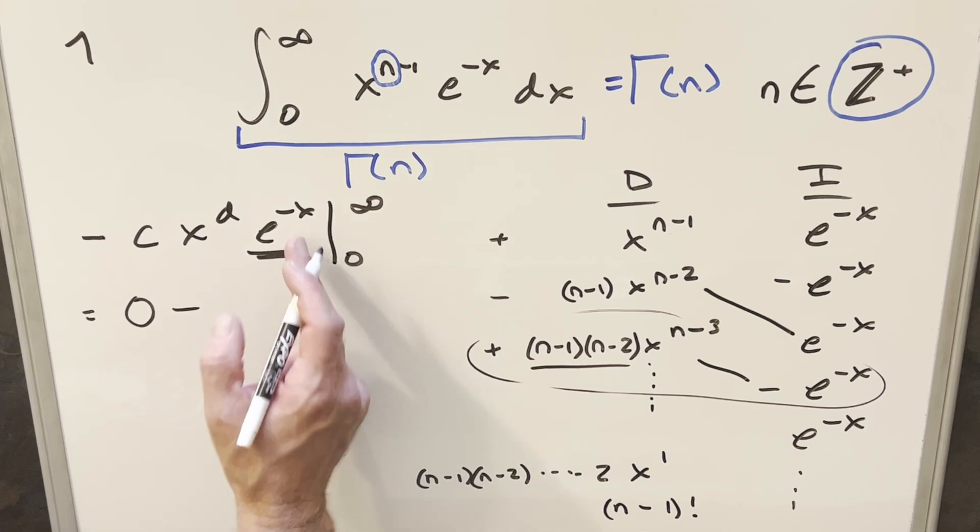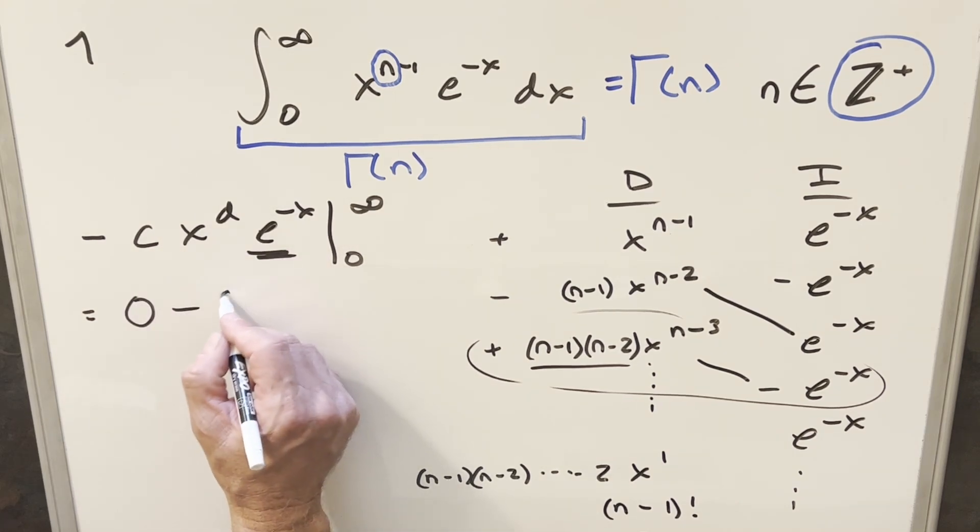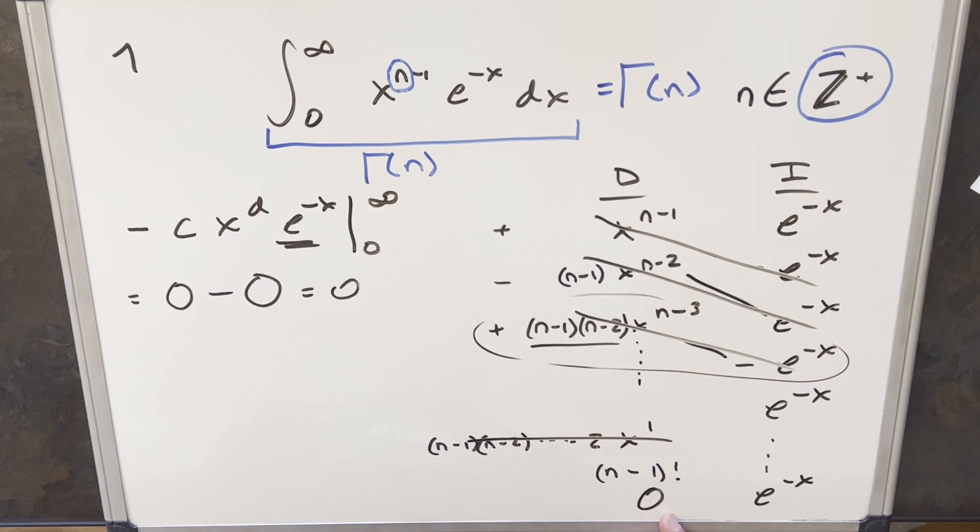this term is just going to 1, this is just some number, but then we have this 0, so this is all going to 0. So what's going to happen for all these diagonals is they're all getting wiped out and none of that matters. The only thing that's going to matter is this last one right here.